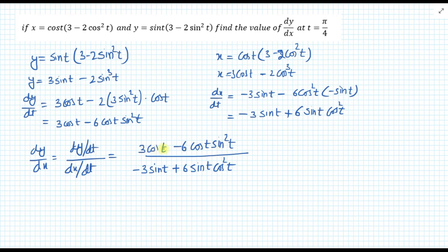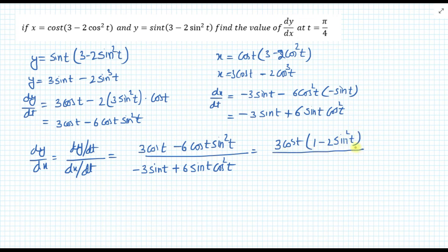Now I take 3 cos(t) as common from the numerator and minus 3 sin(t) as common from the denominator. This gives (1 minus 2 sin squared t) divided by (minus 1)(1 minus 2 cos squared t), and the 3s cancel out.